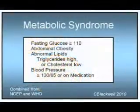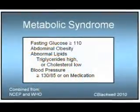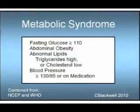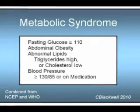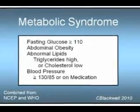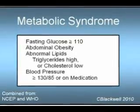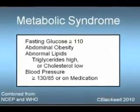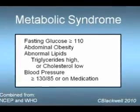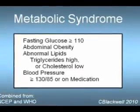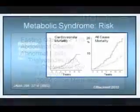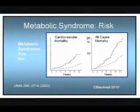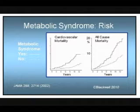We cannot leave this subject without mentioning metabolic syndrome. In the US, it affects 25% of people in middle age and 35% of the older population. It starts with weight gain, particularly in the abdominal area. It is associated with elevated blood lipids, high blood pressure, and insulin resistance. This group of findings is recognized as a strong predisposition to developing diabetes and cardiovascular disease.